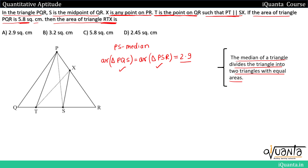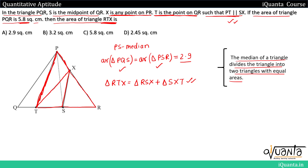Now we need to find the area of triangle RTX. The only information we have is that PT is parallel to SX. If we focus on triangle RTX, it is made up of two smaller triangles: triangle RSX and triangle SXT. So the area of RTX equals the area of RSX plus the area of SXT.